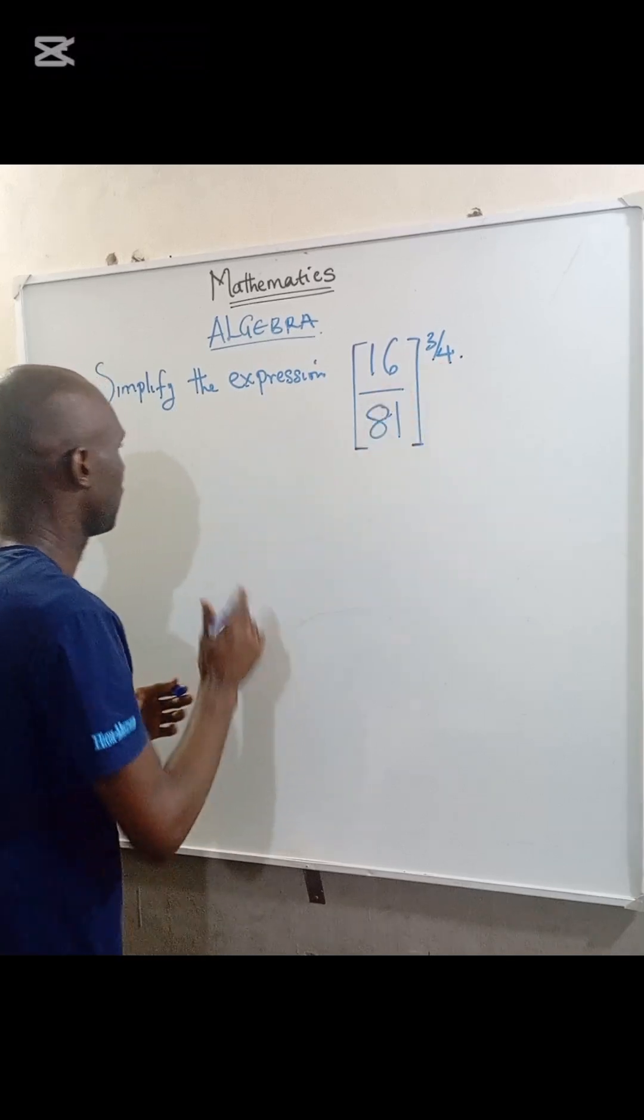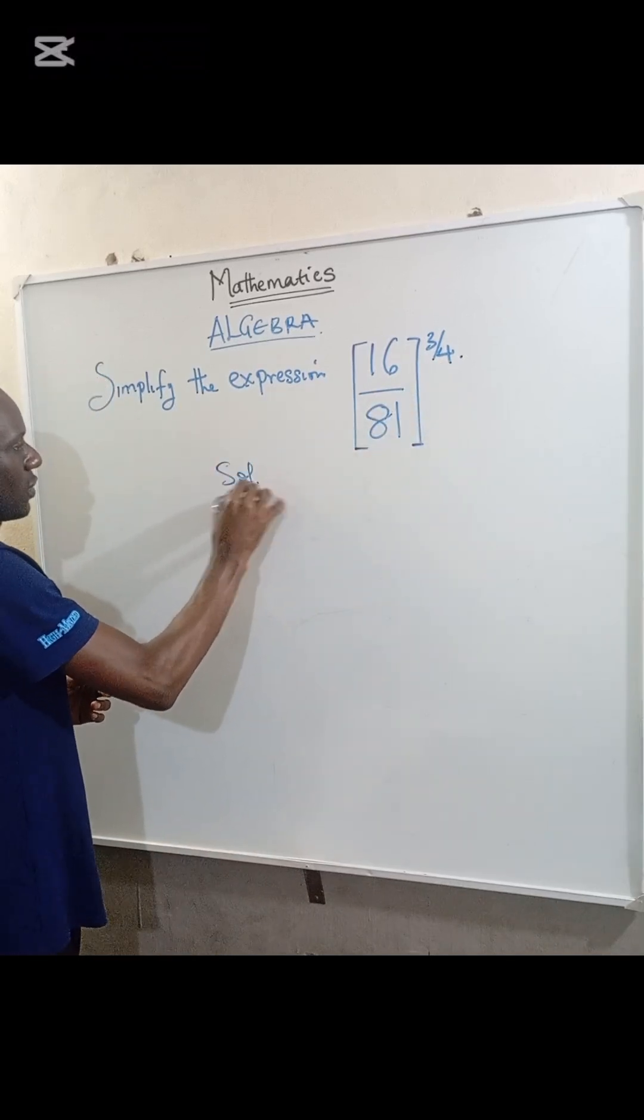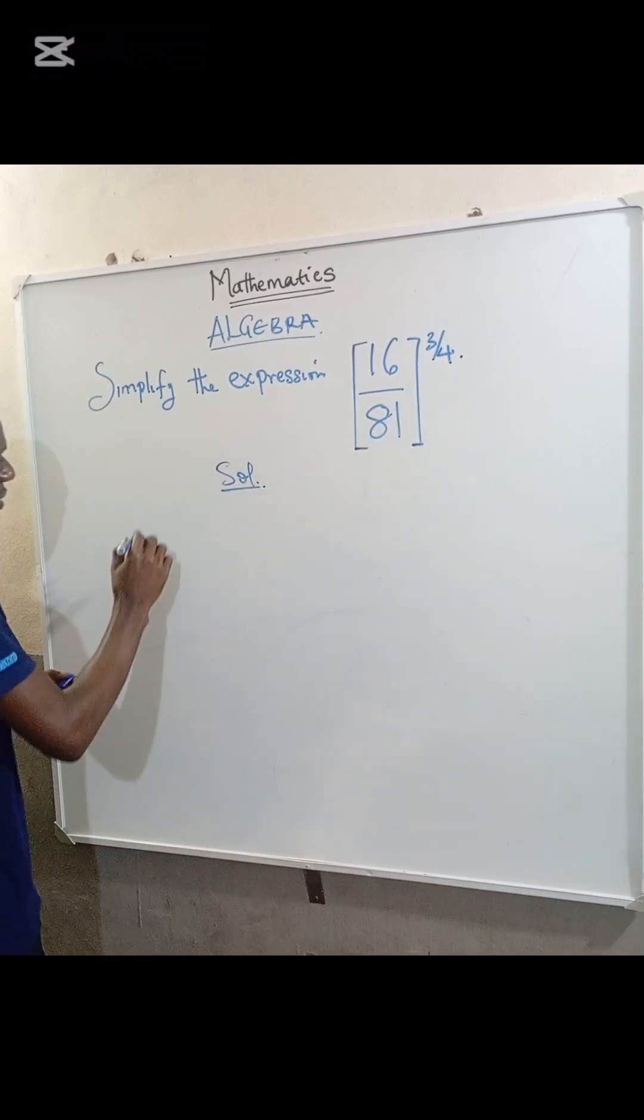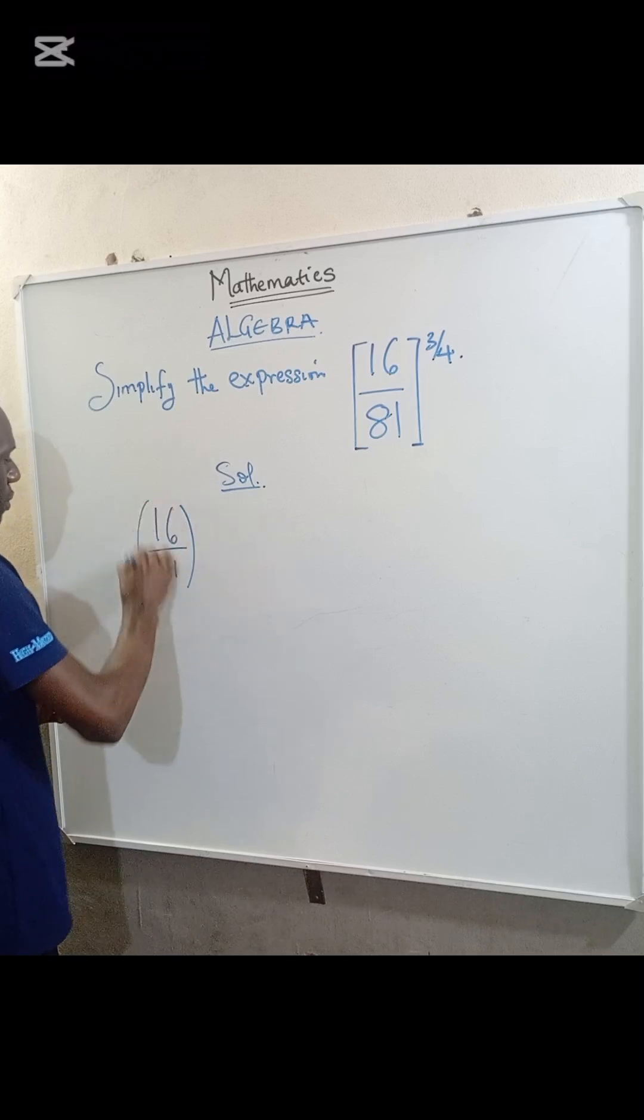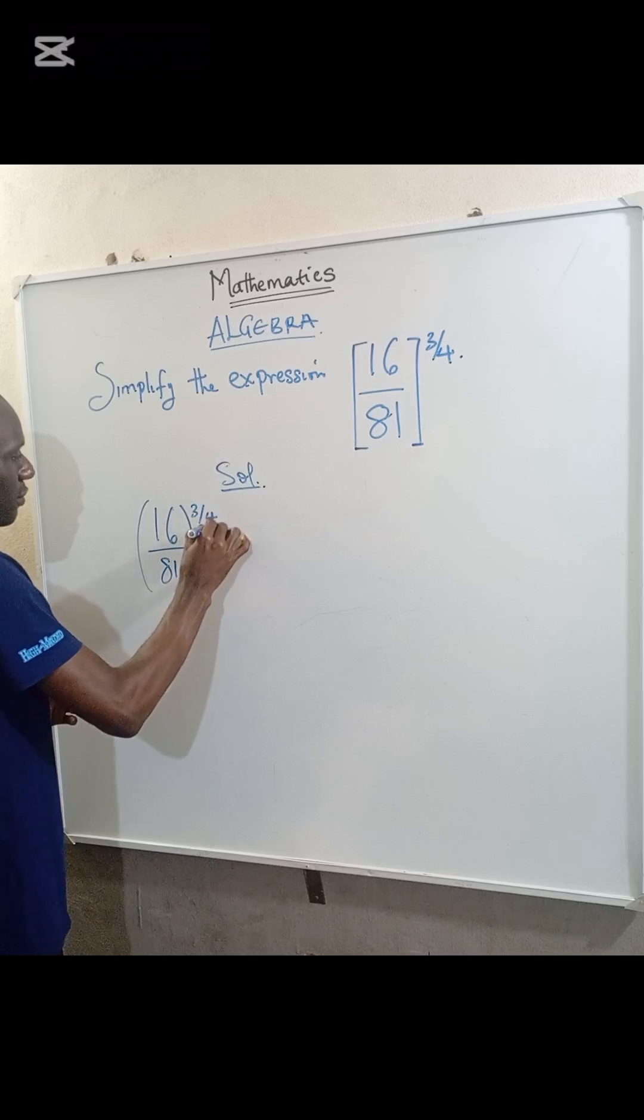So we have 16 divided by 81, all raised to the power of 3 divided by 4.